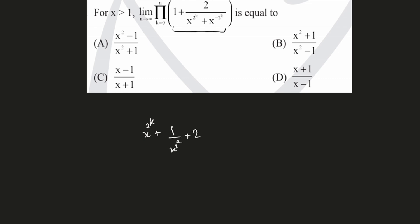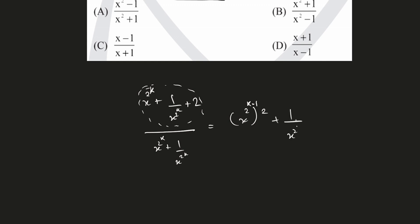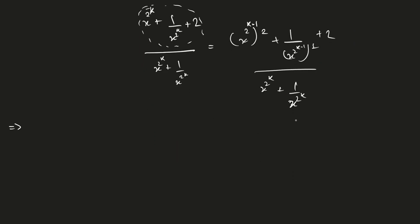We write this expression as x^(2^k) · x^(2^(k+1)) / x^(2^k) + 2, whole divided by x^(2^(k+1)) / x^(2^k). Here I'll be able to make a perfect square. Writing x^(2^k) as x^(2^(k−1)) whole squared, then x^(2^(k−1)) + 1/x^(2^(k−1)) whole squared, divided by x^(2^k) + 1/x^(2^k). This simplifies with a perfect square in the numerator: (x^(2^(k−1)) + 1/x^(2^(k−1)))^2, divided by x^(2^k) + 1/x^(2^k).